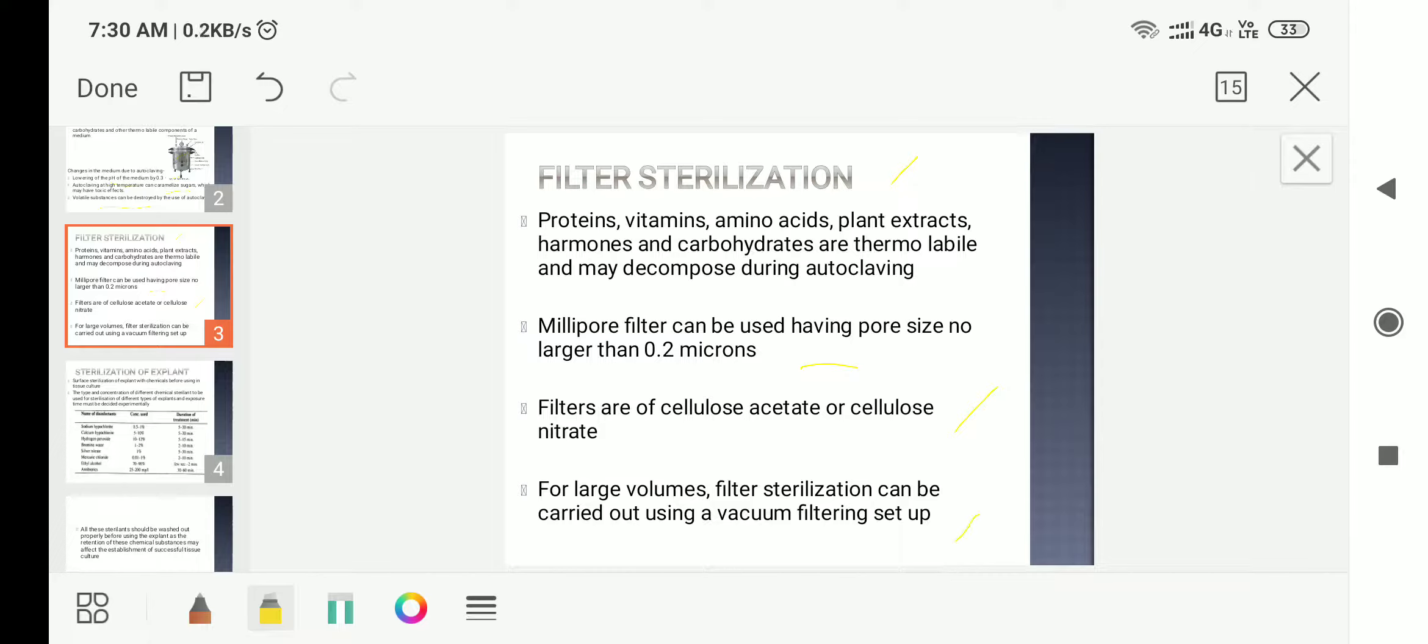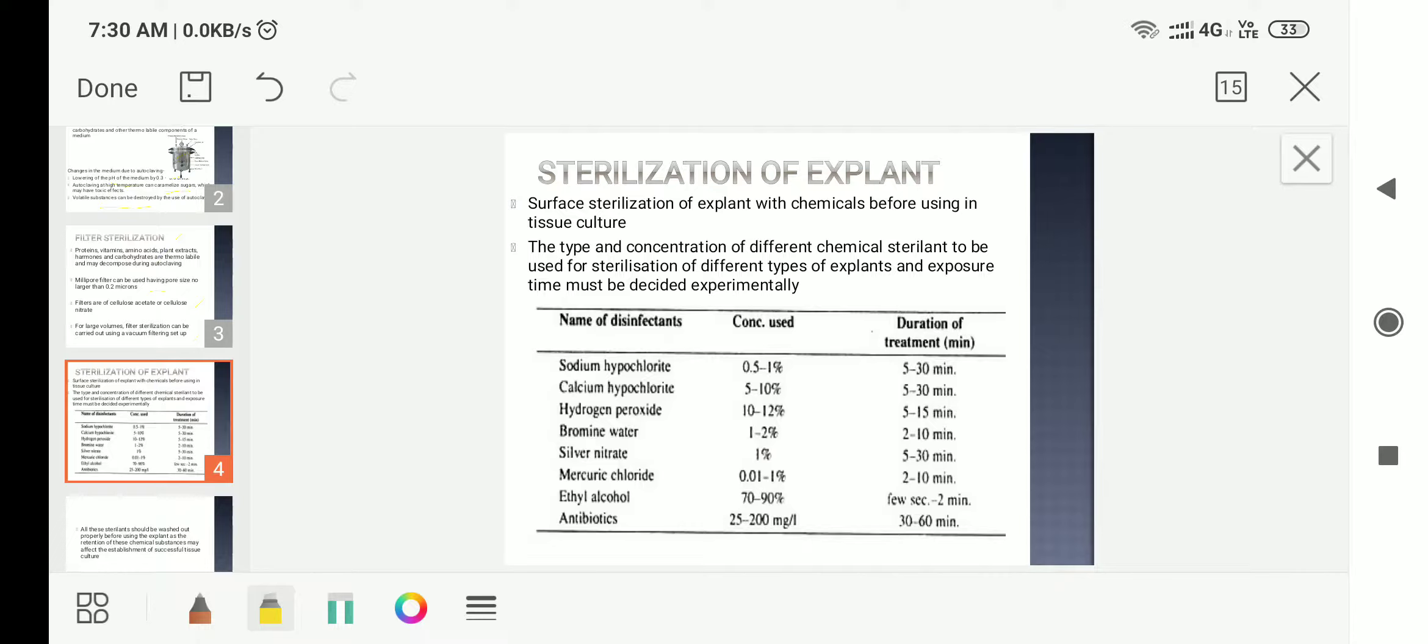If you have large volume of media, it will take longer time, so a vacuum setup is used. This applies pressure and reduces the sterilization time period. Now, how is sterilization of the explant done? It's very important that the explant taken from the mother plant should be surface sterilized. For that, some chemicals are used. Which chemical to use and what concentration would be effective is decided experimentally before performing the experiment.